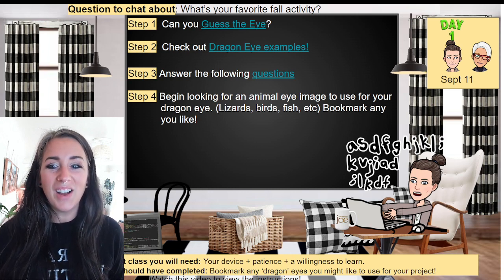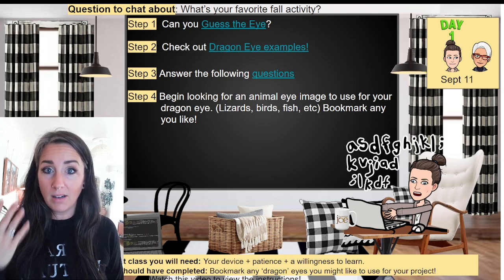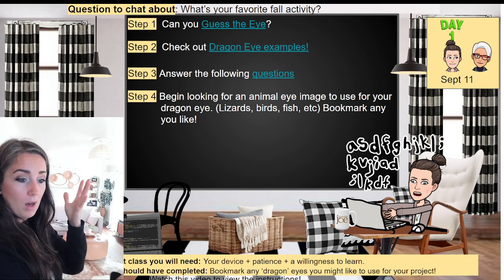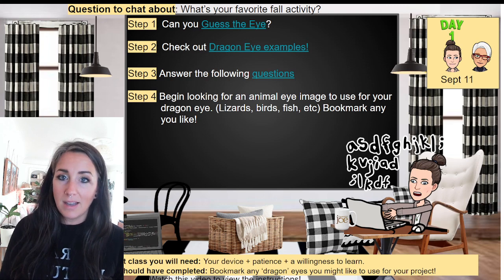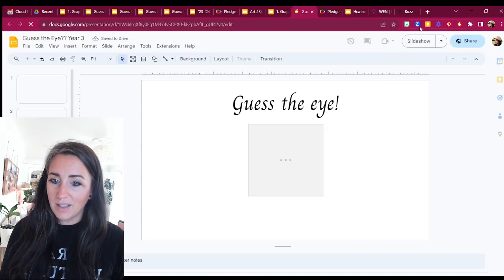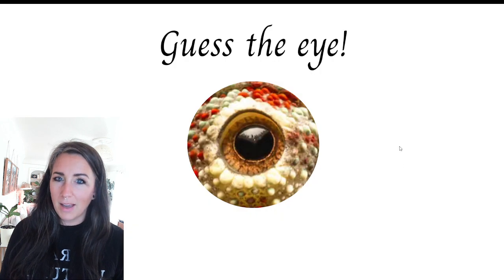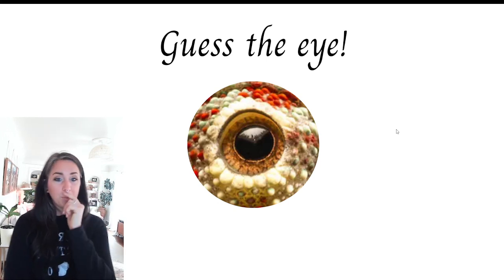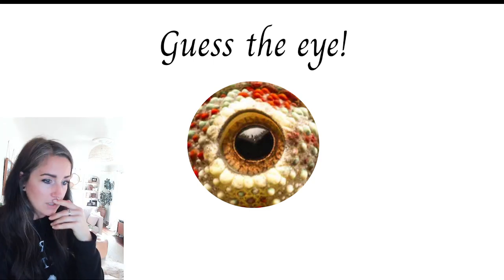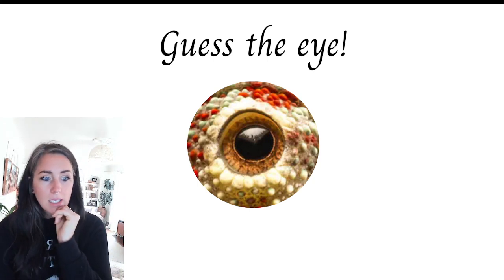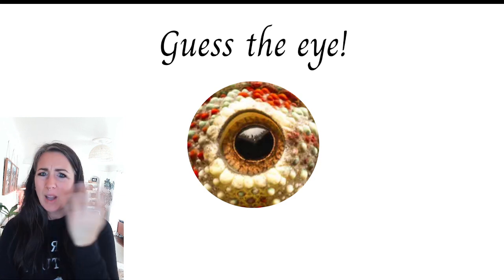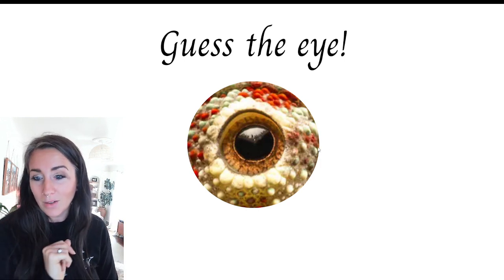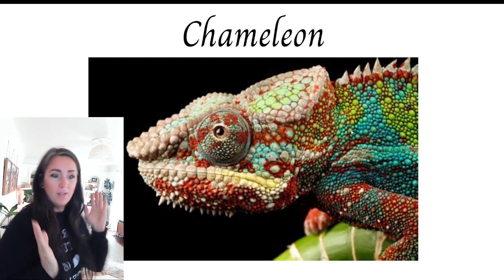What you're going to do — in our slides in Buzz on our landing page for today, where it says day one, click on that and it's going to bring you to the slide you're seeing right here. In step one it says 'Can you guess the eye?' If you click on that, it's going to take you to a new slideshow. Go ahead and put it in slideshow mode right away so we're not giving away any answers. You're going to see an eyeball and think, what does this eyeball belong to? Is that an octopus? Is it a snake? Is it a goat? Probably not a goat. Think about it to yourself, then once you think you got it, scroll to the next slide and find out — it's a chameleon! Super cool, right?